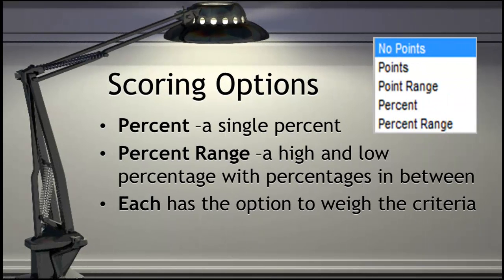Blackboard also gives you the option to score an assignment by percentage. There is the single percent option as well as the percent range option. Both give you the option to weigh the criteria. The bottom line is that you will have to try the different options to find out what best works for you.